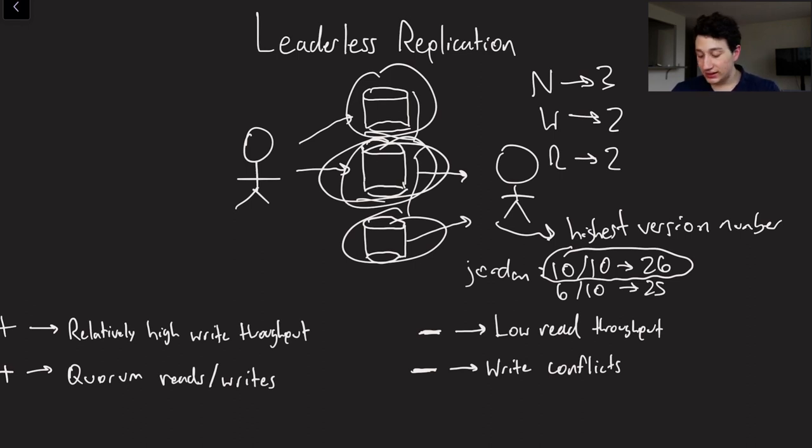And in the background, these things stay consistent with one another via read repair, which is basically the most up-to-date database correcting the other databases. And then there's also anti-entropy in the background, and that's basically the database sending each other their changes, oftentimes through a data structure like Merkle trees. And that's just a process that happens asynchronously in the background.